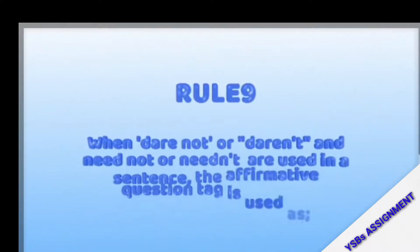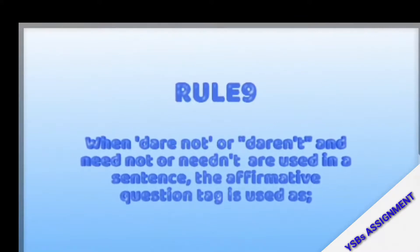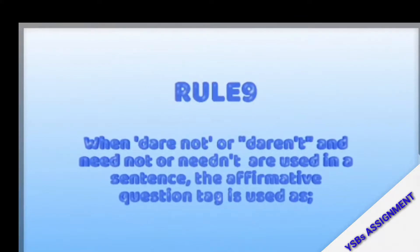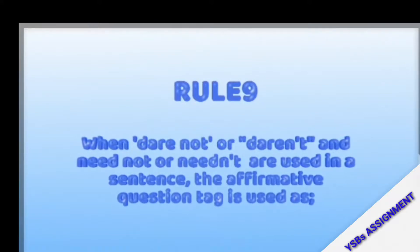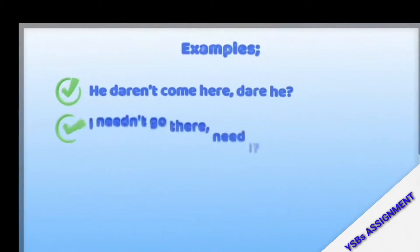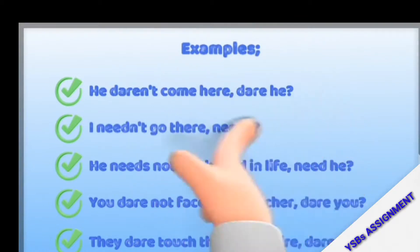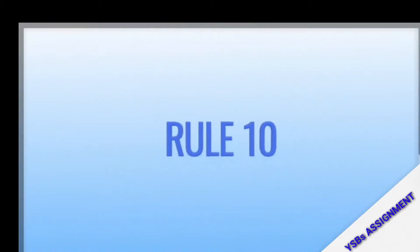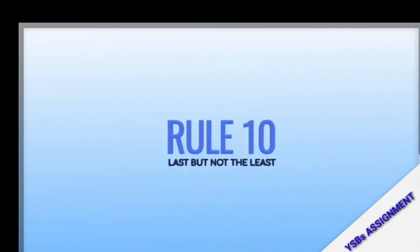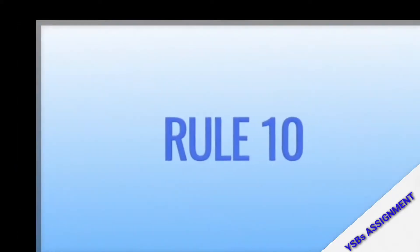Rule number nine: when 'daren't' or 'needn't' are used in a sentence, the affirmative question tag is used. Examples: 'He daren't come here, dare he?' / 'I needn't go there, need I?' / 'He needs not to work hard in life, need he?' / 'You dare touch the naked wire, dare you?' So negative verbs like 'daren't' and 'needn't' take positive question tags.